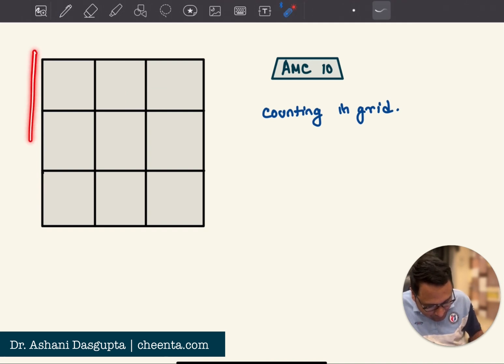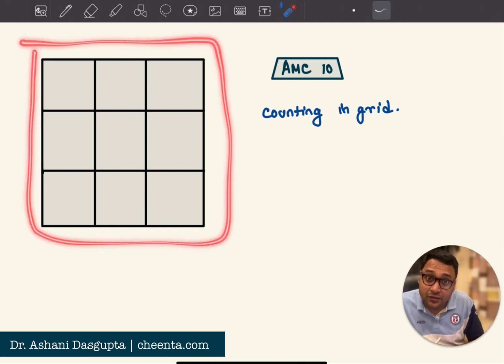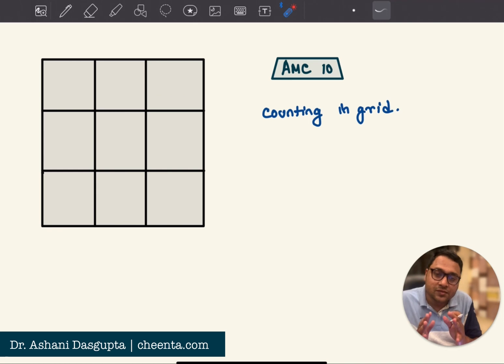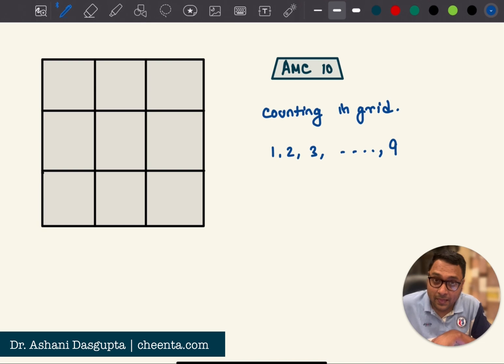We have a grid, a 3 by 3 grid. So there are 3 columns and 3 rows. And you want to put the numbers 1, 2, 3, 4, up to 9 in these boxes. You cannot repeat a number, so you cannot have like 1, 1 and so on.